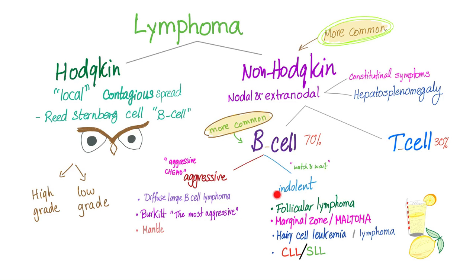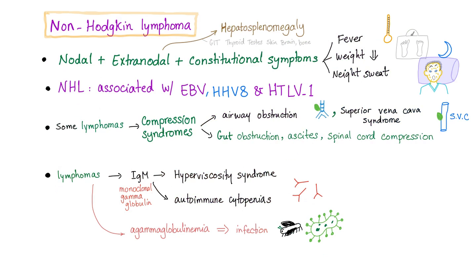It has aggressive and indolent subtypes. Non-Hodgkin's lymphoma has nodal involvement, extra-nodal involvement, and constitutional symptoms. Extra-nodal sites include liver, spleen, GIT, thyroid, testes, skin, brain, and sometimes bone.